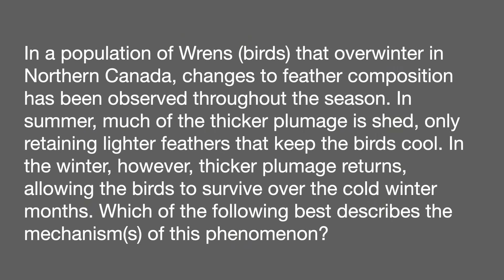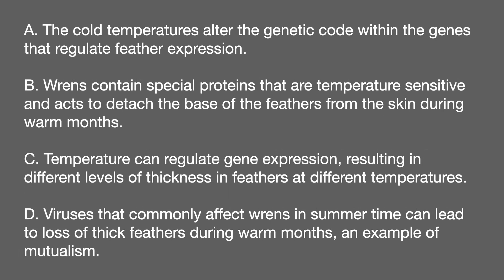In a population of wrens that overwinter in northern Canada, changes to feather composition have been observed throughout the season. In summer, much of the thicker plumage is shed, retaining only lighter feathers. In the winter, thicker plumage returns, allowing the birds to survive the cold months. Which of the following best describes the mechanism of this phenomenon? A: cold temperatures alter the genetic code within genes that regulate feather expression. B: wrens contain special proteins that are temperature sensitive and act to detach the base of feathers from the skin during warm months. C: temperature can regulate gene expression, resulting in different levels of feather thickness at different temperatures. D: viruses that commonly affect wrens in summertime can lead to loss of thick feathers during warm months, an example of mutualism.